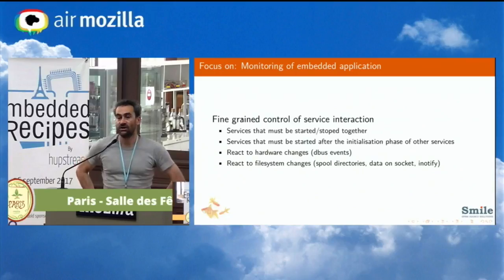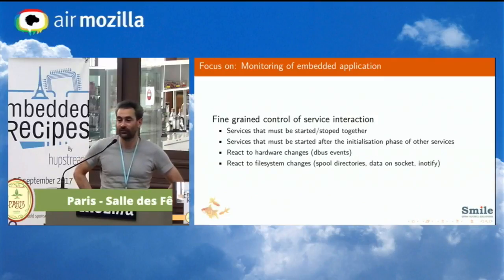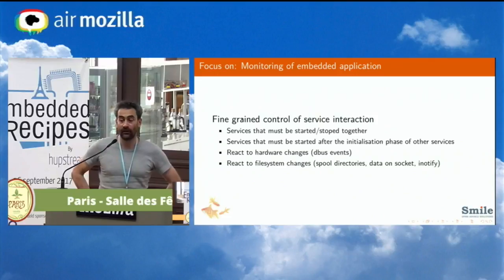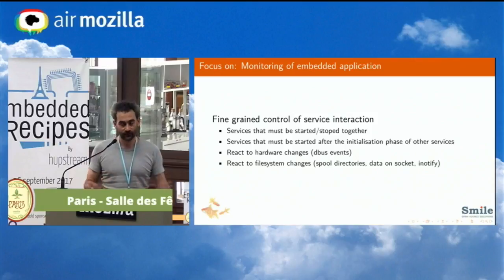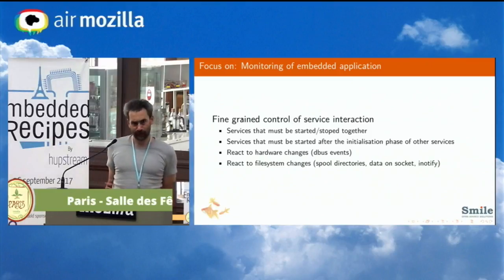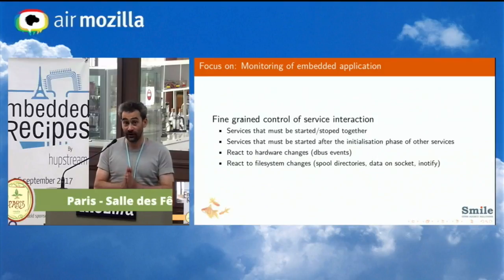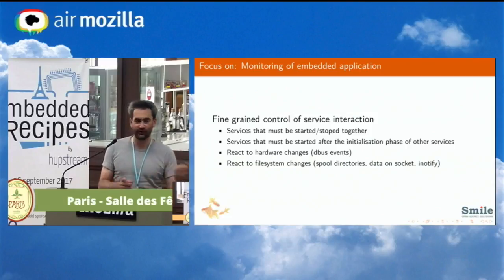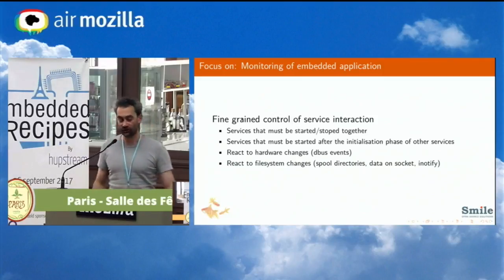Systemd can react to filesystem changes via spool directories — you don't need to start CUPS at boot, it will be started whenever something is in the spool. It can react to data on sockets, replacing inetd to start network daemons when data arrives, and useful when multiple applications communicate via local sockets — for instance, starting the logging daemon only when someone tries to log. Finally, it can react to someone writing to a file, which is useful with proprietary software that writes info to files — instead of polling with shell scripts, you just react to a notify event.